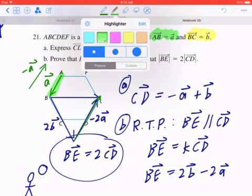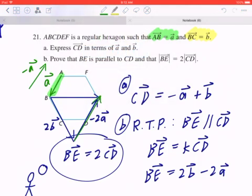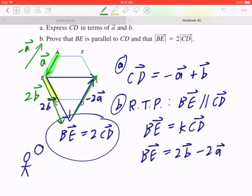Now likewise, if you look at the other part, we know that BC equals to B. And again, this is the vector that we're working with. One of them is B. But you have two of these, so that gives you 2B. That's why BE equals to 2B minus 2A.